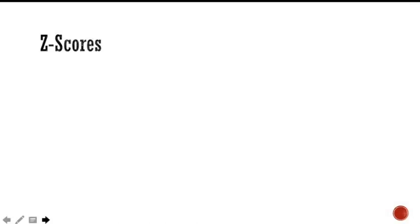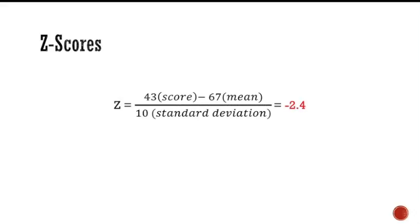Therefore, the z-score formula will be used. As a reminder, since the score is less than the mean, a correct calculation of the z-score would be a negative number. So: 43 (score) minus 67 (the mean), divided by 10 (the standard deviation), equals negative 2.4. Based on the empirical rule, 95 percent of the scores lie between 67 (the mean) and 47, two standard deviations away from the mean.